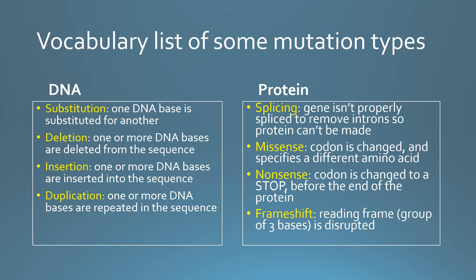At the protein level, you can have a missense mutation, which puts a different amino acid than is supposed to be there at some place in the protein. A nonsense mutation — which doesn't mean what you might think — means you stop making the protein before it's supposed to be done. Or you can mess up the grouping of three DNA bases for each amino acid, causing a frameshift where the amino acids will be totally wrong. This concludes the lecture — hopefully you're a little more familiar with DNA and genetic reports. Thank you for listening.